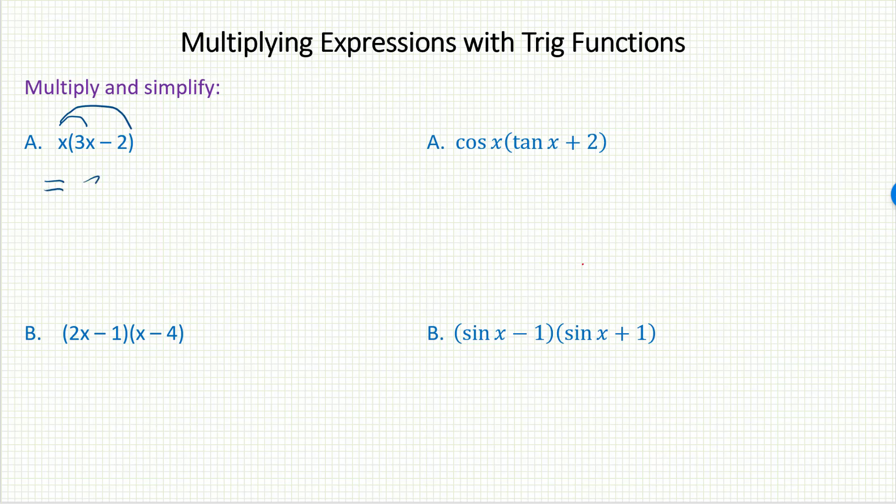And so I say x times 3x, 3x squared, minus x times 2, 2x. These are not like terms, which means I don't have any way of simplifying. Here would be the final answer.